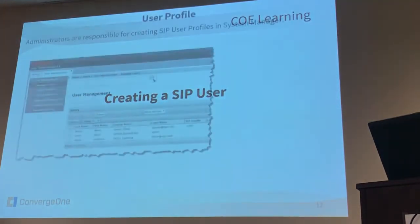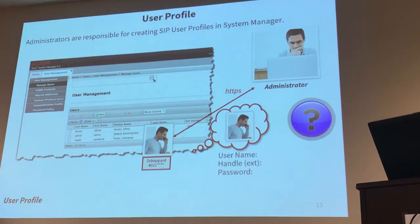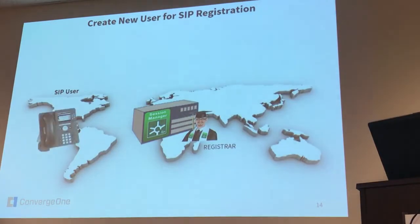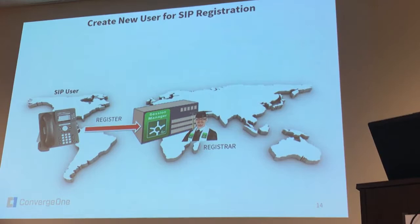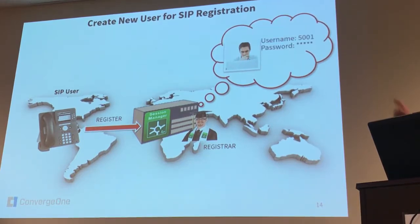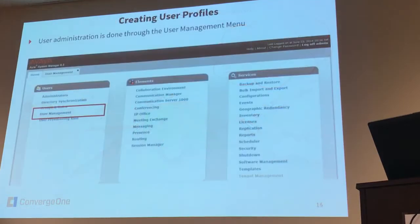To create the SIP users, go to Manage Users under User Management. So far we haven't assigned a communication profile to the users — that's what we're going to do now. You're going to assign an extension number and a password so the user can register their SIP phone, because the phone is going to send a REGISTER message to Session Manager with the extension number, domain, and password configured in the user profile.